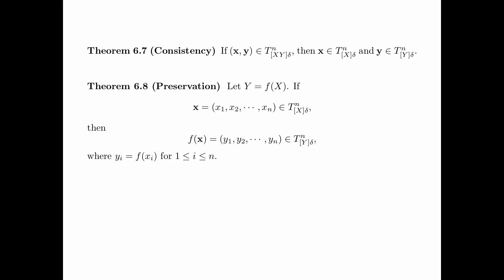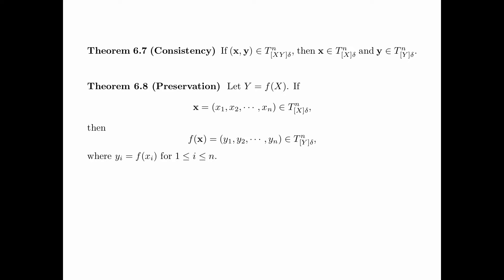Theorem 6.8 is called the preservation property. Consider a random variable x and let y be f(x). If a sequence x = (x_1, x_2, ..., x_n) is delta-typical with respect to the distribution p(x), then the sequence f(x), obtained by applying the function f to the sequence x component-wise, is delta-typical with respect to the marginal distribution p(y). The proofs of these two theorems are rather straightforward; for the details, please see the textbook.